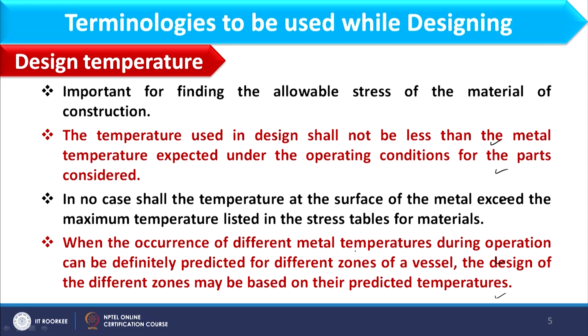For carbon steel and other alloys, we have maximum permissible temperature values based on the melting temperature of the material. These are the upper limits for material to be considered in designing. There are two limits: the design temperature should not be lower than the metal operating temperature, and should not exceed the maximum permissible temperature. When different zones of the vessel experience different metal temperatures, each zone may be designed based on its predicted temperature.